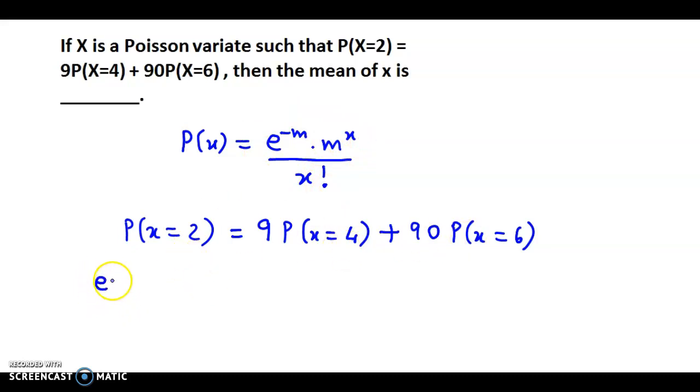So here we will have e^(-m) × m^2 / 2! = 9 × e^(-m) × m^4 / 4! + 90 × e^(-m) × m^6 / 6!.